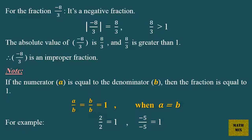For the fraction minus 8 over 3, it's a negative fraction. The absolute value of minus 8 over 3 is 8 over 3, and 8 over 3 is greater than 1. Therefore, minus 8 over 3 is an improper fraction.